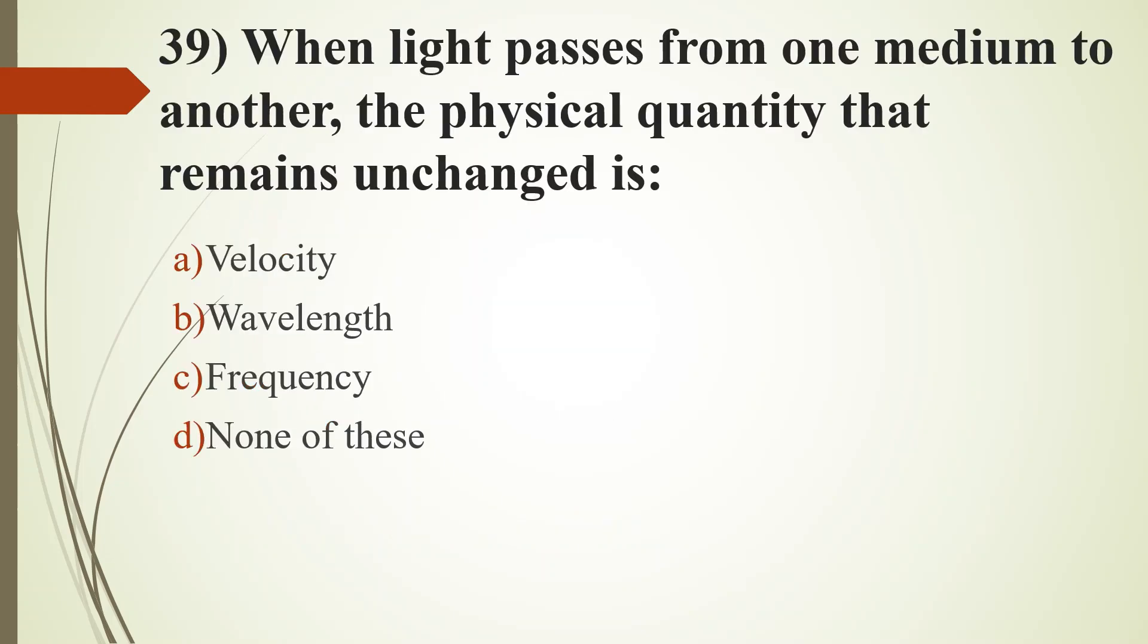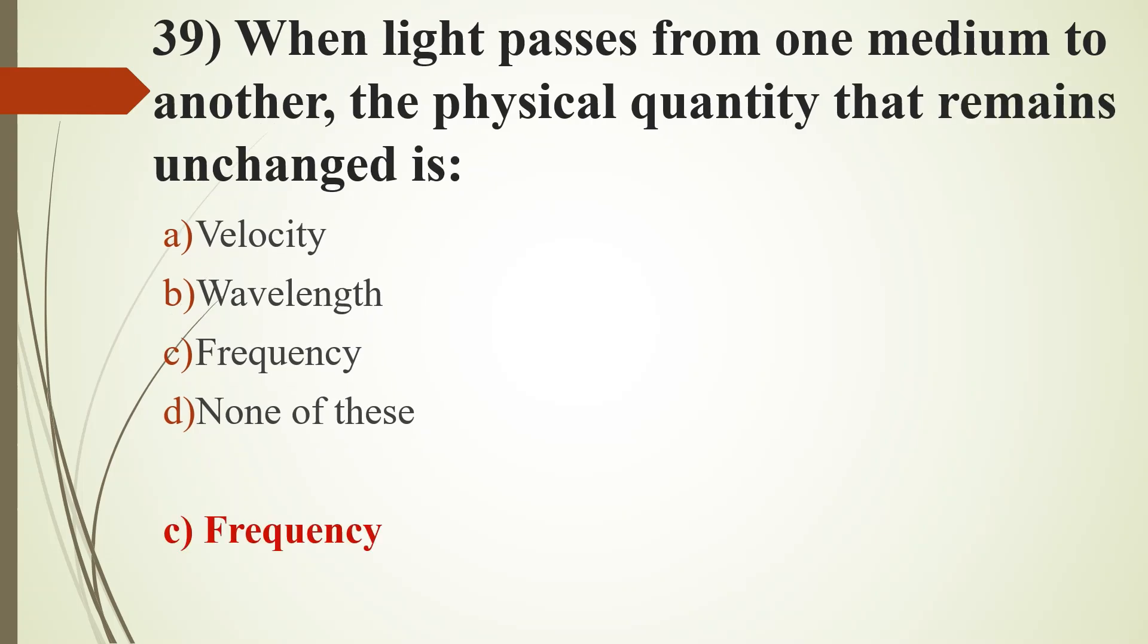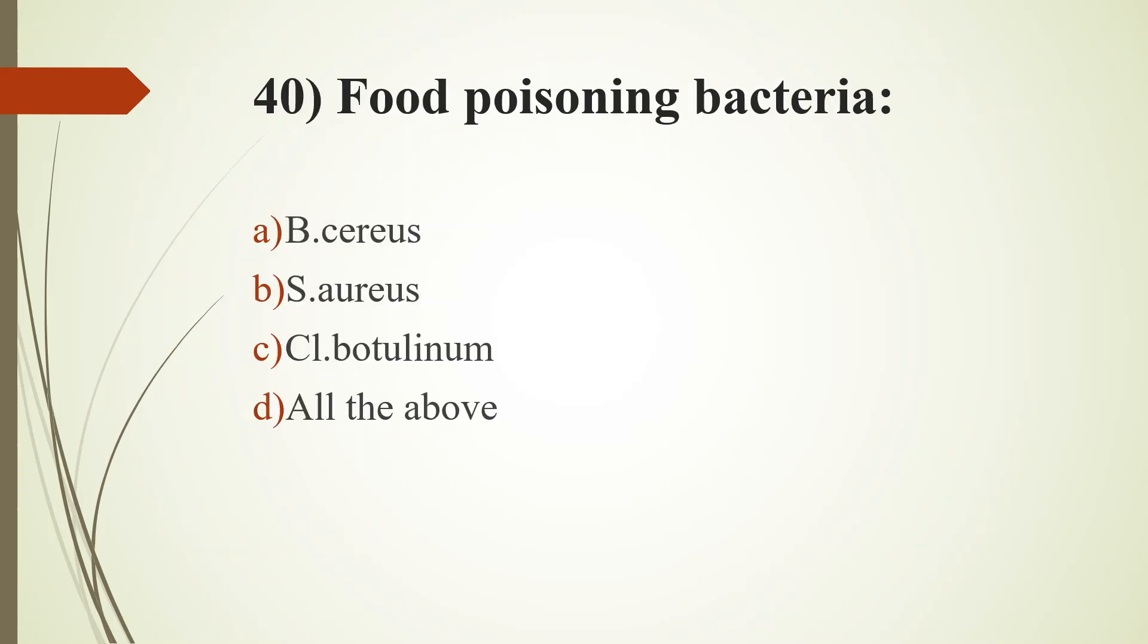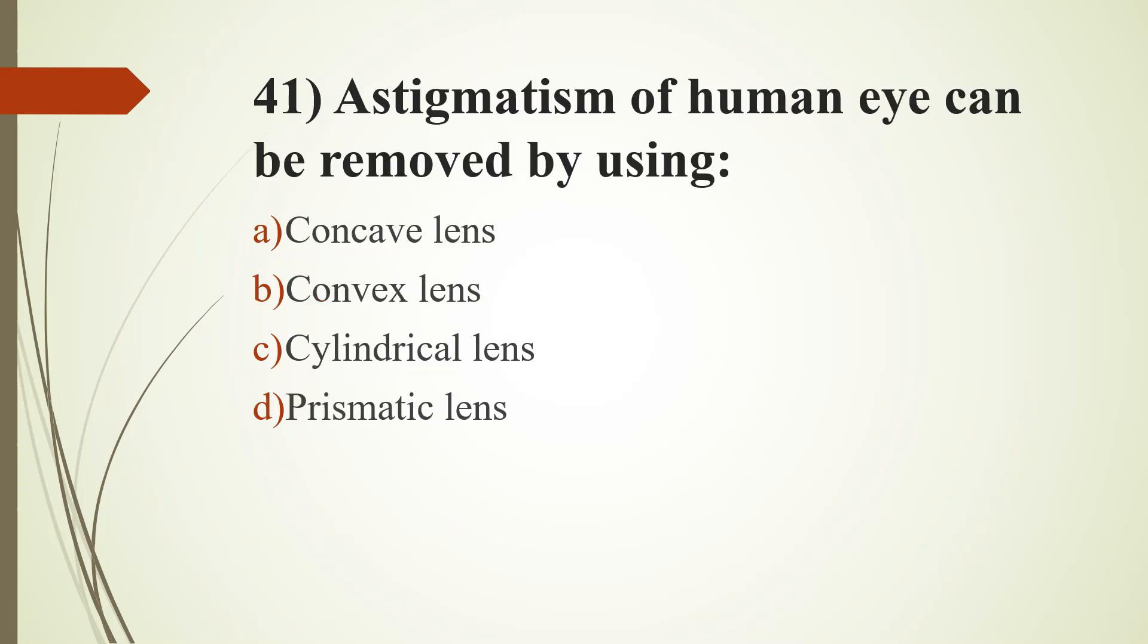39th question. When light passes from one medium to another, the physical quantity that remains unchanged is: option A, velocity; option B, wavelength; option C, frequency; option D, none of these. Answer is option C, frequency. 40th question. Food poisoning bacteria: option A, bacillus cereus; option B, staphylococcus aureus; option C, clostridium botulinum; option D, all of the above. Answer is option D, all of the above. 41st question. Astigmatism of human eye can be removed by using: option A, concave lens; option B, convex lens; option C, cylindrical lens; option D, prismatic lens.